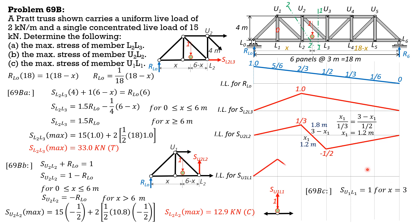So SU1L1 is equal to 1 for X is equal to 3 meters only. And that is, it is 0. So the influence line would look like this. And this is 1.0. Therefore, SU1L1 max is 15 times 1, then plus 2 times the area under this diagram. So 2 times 1 half of 6 times 1. So SU1L1 max is tension and it is 21 kilonewtons.